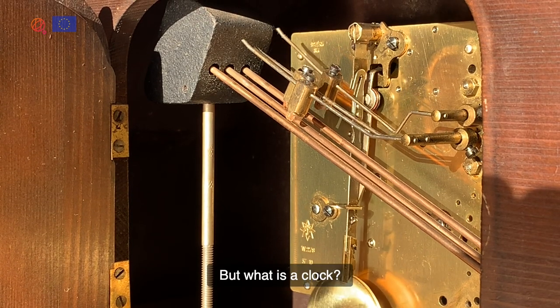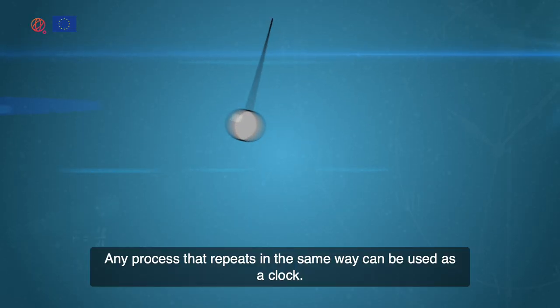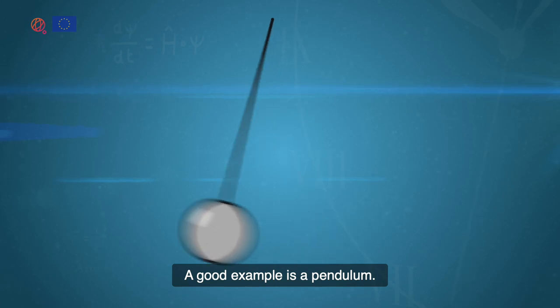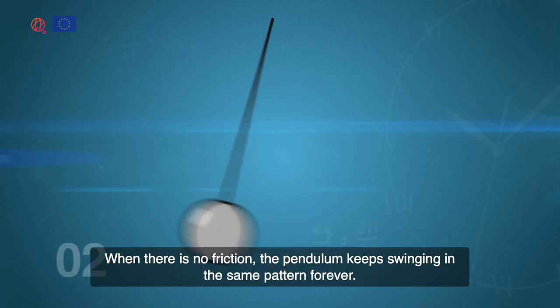But what is a clock? Any process that repeats in the same way can be used as a clock. A good example is a pendulum. When there is no friction, the pendulum keeps swinging in the same pattern forever.